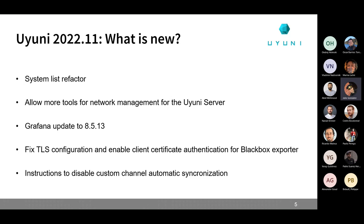There is also a fix for the TLS configuration so we can enable client certificate authentication for the black box exporter. This was not working correctly in the past — even if this was enabled at the formula, it was not working. But now the Prometheus formula has a new section so you can correctly configure the black box exporter with the TLS certificate and key for client certificate authentication instead of using username and password.